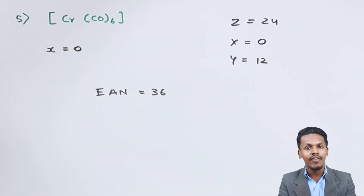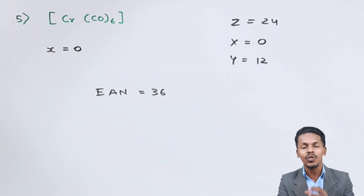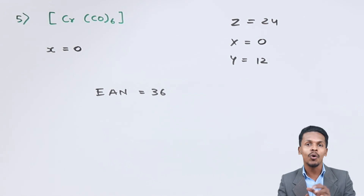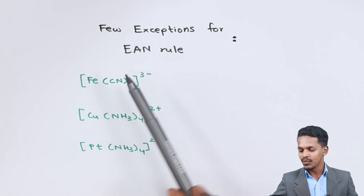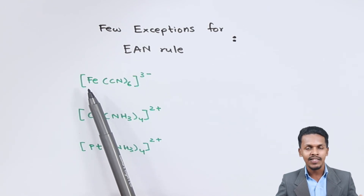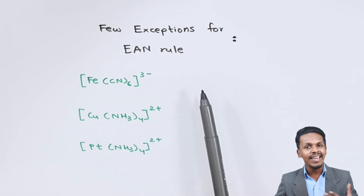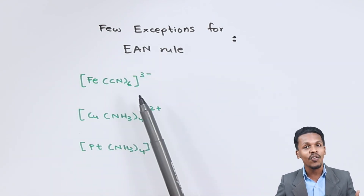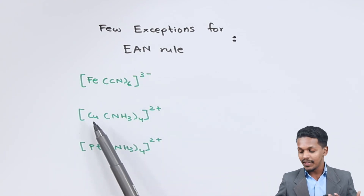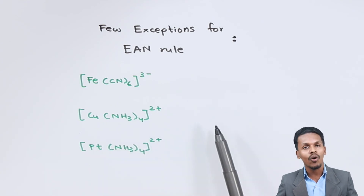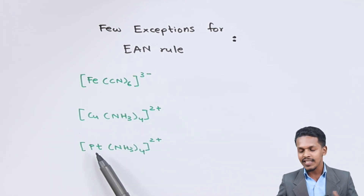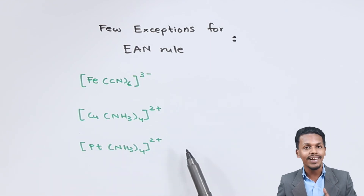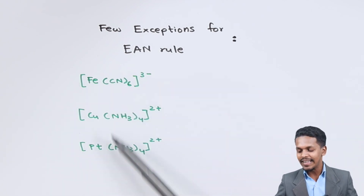Even if a complex does not have an EAN equal to 36 or 86, or any number matching the atomic number of a noble gas, it can still be stable. There are exceptions to the EAN rule. For example, an iron complex has an EAN of 35, not 36, but is still stable. Similarly, a copper complex has an EAN of 35, not 36, and a platinum complex has an EAN of 84 instead of 86 — yet all these complexes are stable in nature.